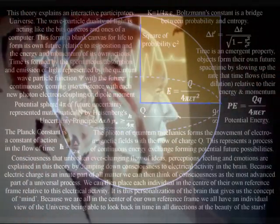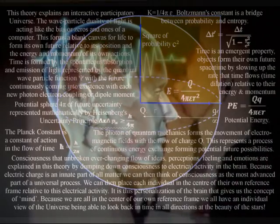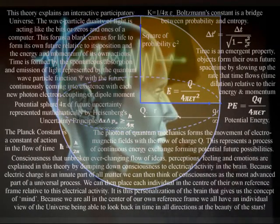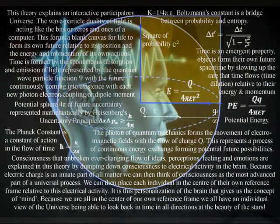In this theory the individual is an interactive part of creation and because the photon is also the carrier of the electromagnetic force, electrical potential is linked to our future potential with the electrical activity in the brain representing the most advanced part of this universal process.